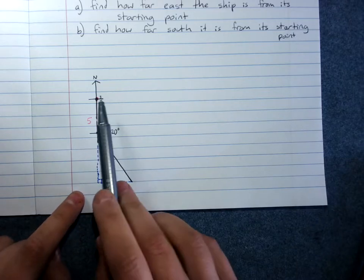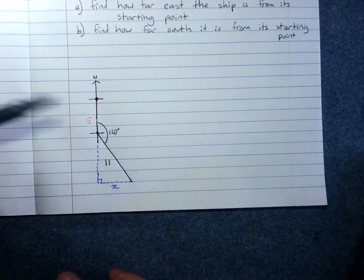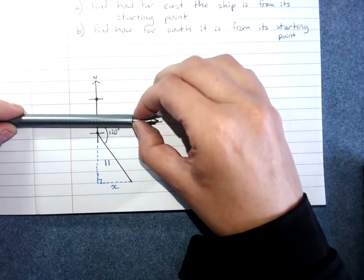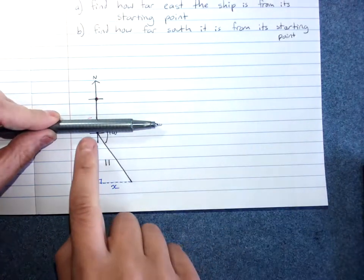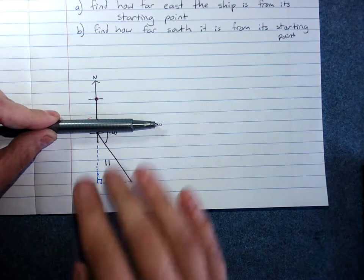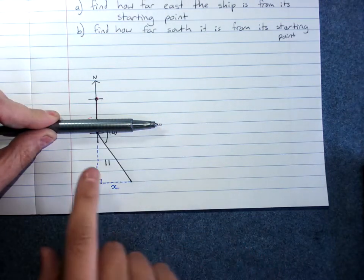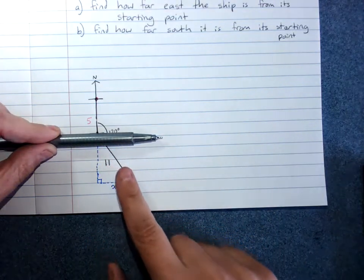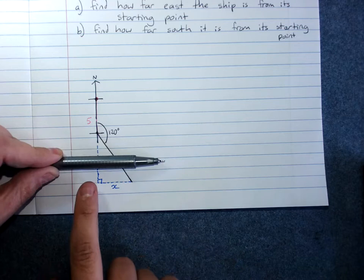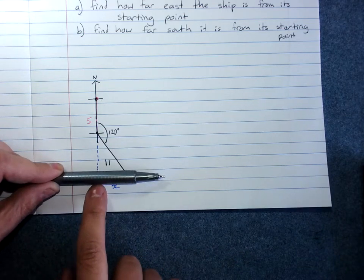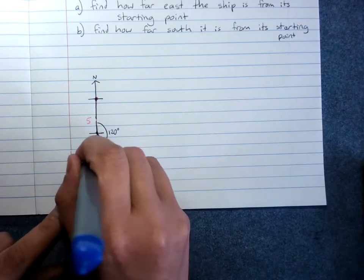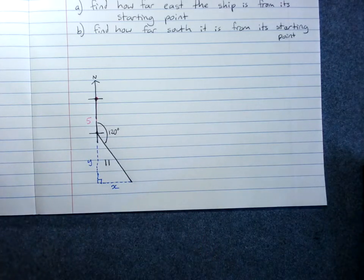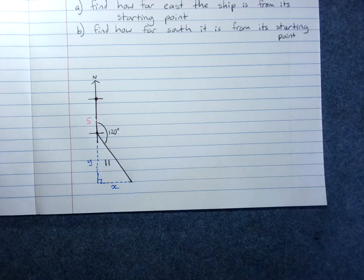How far south the ship is from its starting point does start with this 5 kilometres. They started here, they went 5 kilometres south. And then it's just how much further directly south are they displaced. So this distance here, the ship is going this way, sure, but they're moving southwards. And we want how far south they went. So this distance here, added to that 5, will give us how far south it is.